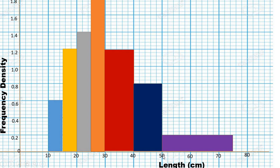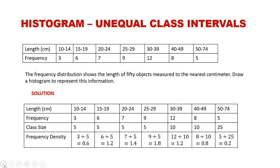The last interval, 50 to 74, has a class size of 25 and a frequency density of 0.2. This is the widest bar on the histogram, spanning 25 units, with the shortest height of 0.2.